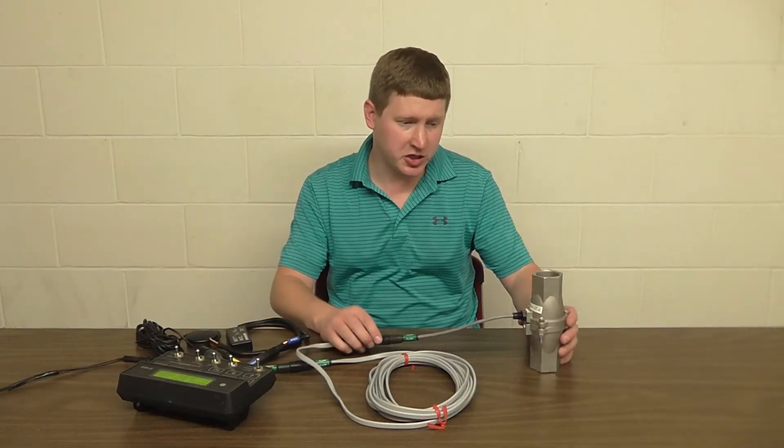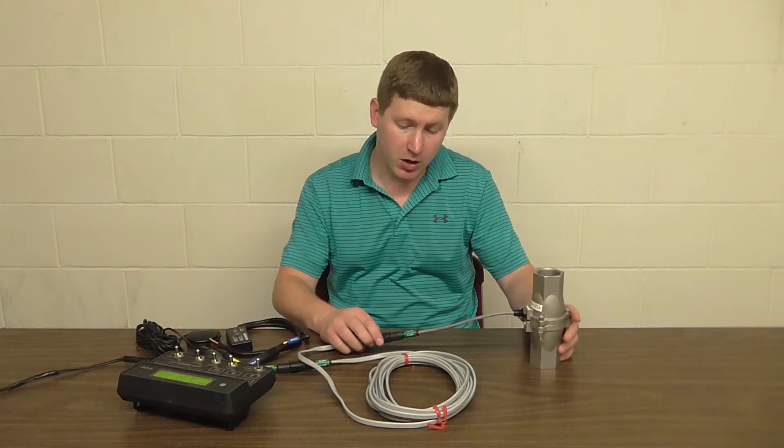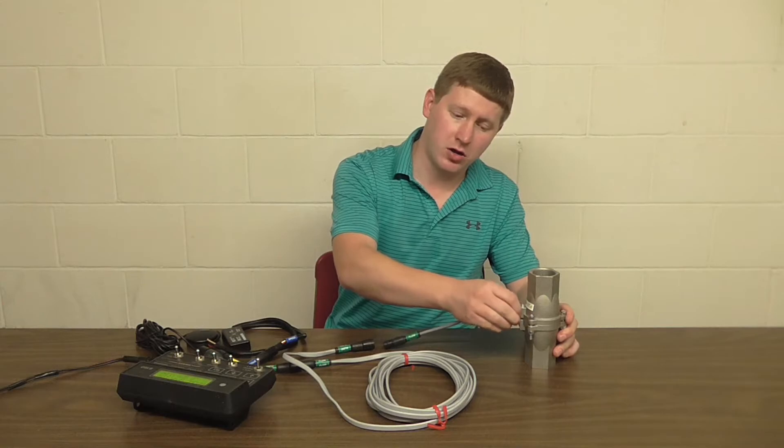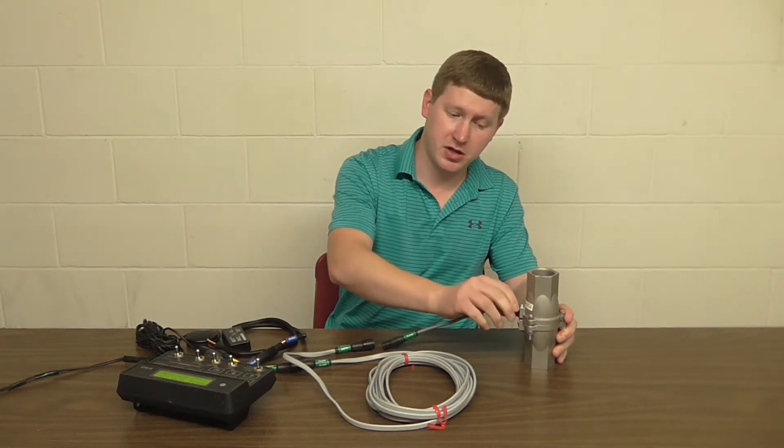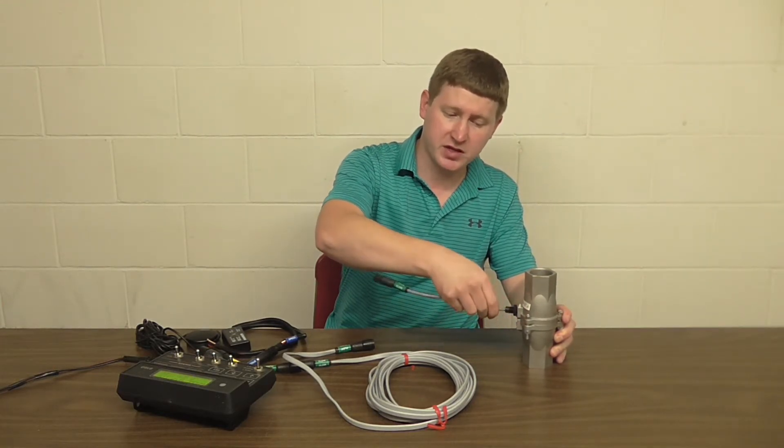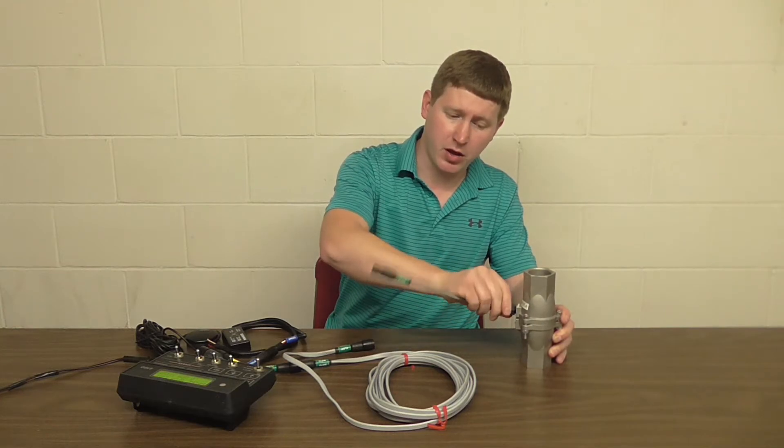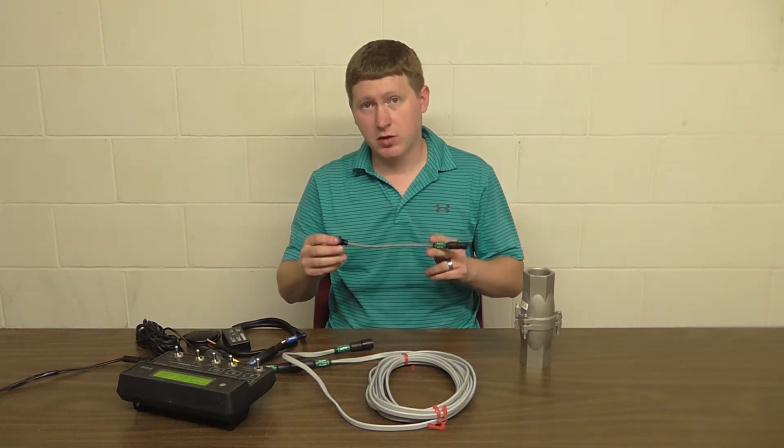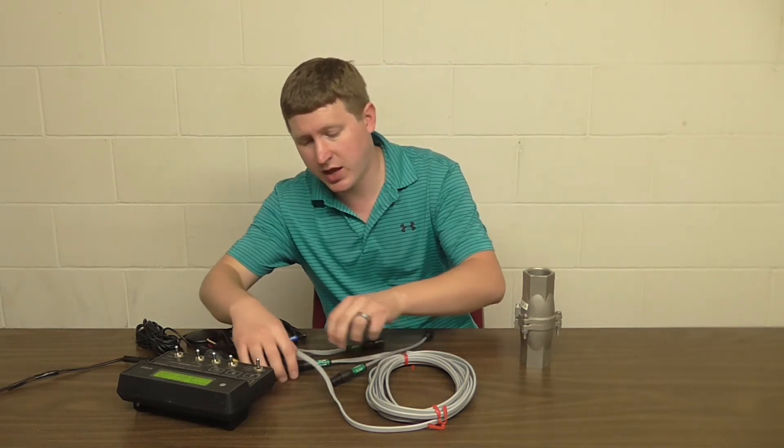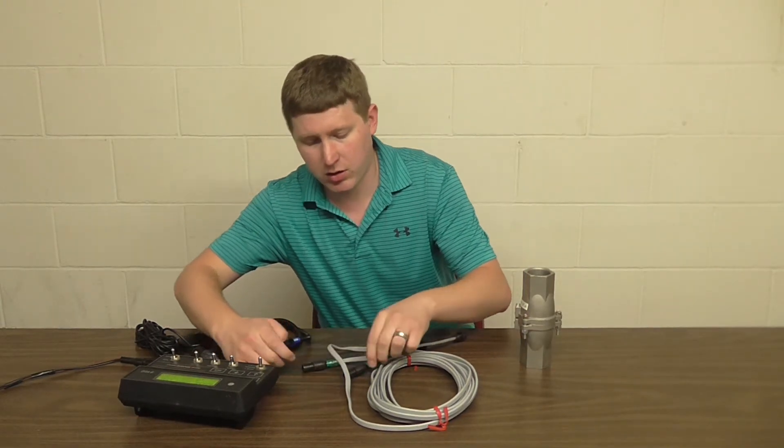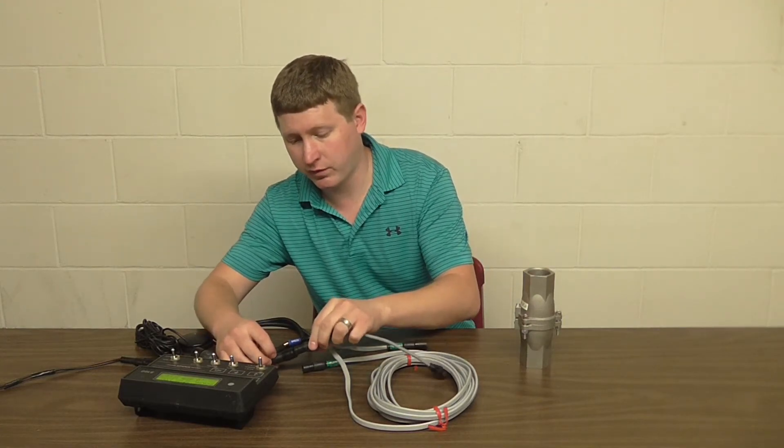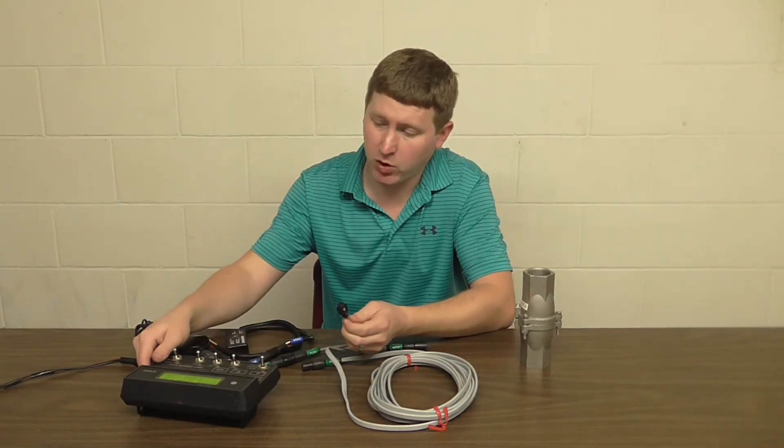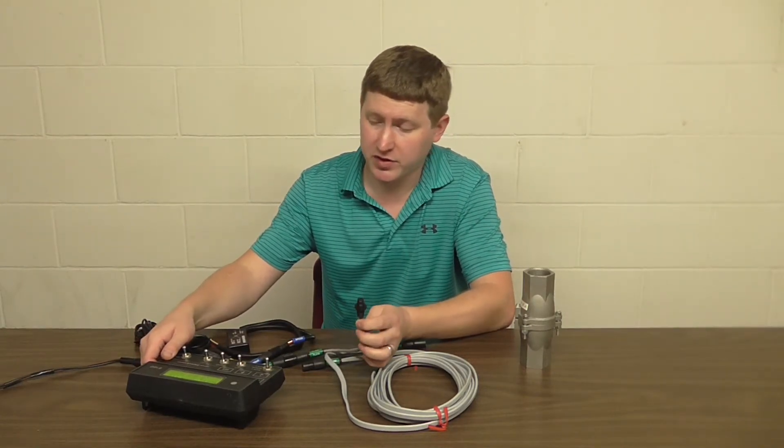Once we've checked to make sure the rotor is clear, the next thing to do would be to go disconnect the sensor, unscrew the jam nut, and then we can remove the sensor from the body of the flow meter. Now once we're done with this, we can take this back up into the cab, plug it directly into the flow cable, and perform a test from the 8160.